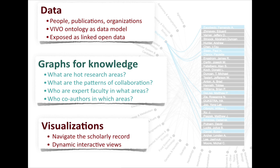Basically, what we're delivering here is data — people, publications, and organizations — based on the VIVO ontology, exposed as open linked data, but we're focusing on this notion of the graph of knowledge.